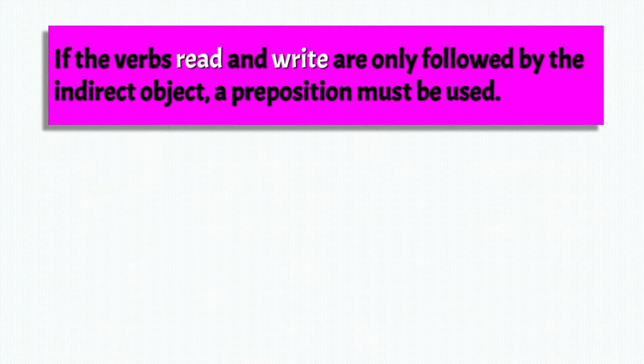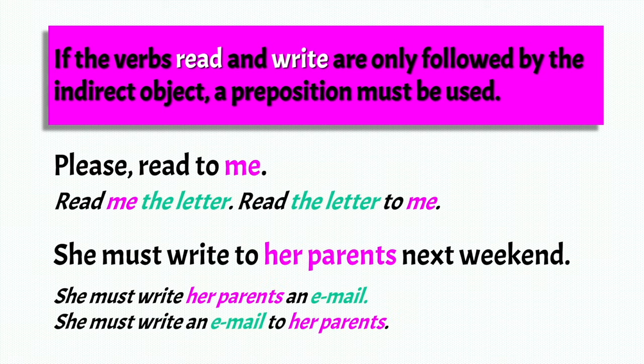Now, if the verbs read and write are only followed by the indirect object, a preposition must be used. Just like these examples: Please read to me. You can even say, read me the letter — so indirect object is me, direct object is the letter. Or read the letter to me — to me is your indirect object, the letter is your direct object.